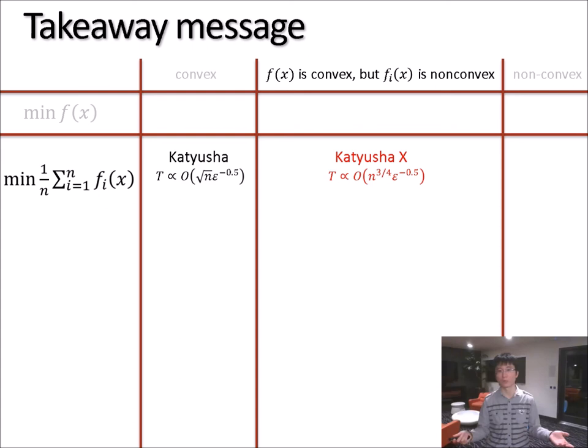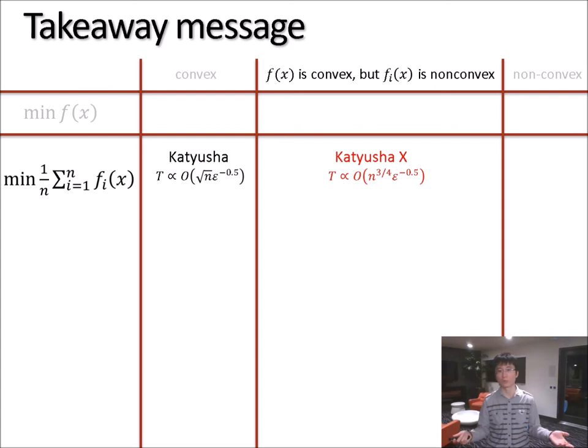So to sum up, we have two Katyusha methods that are very different. They both have some negative momentum flavor and they both actually support proximal updates and they both have linear speedup if you do parallelization. So thank you for your attention. If you have more questions, I can be reached. Thanks.